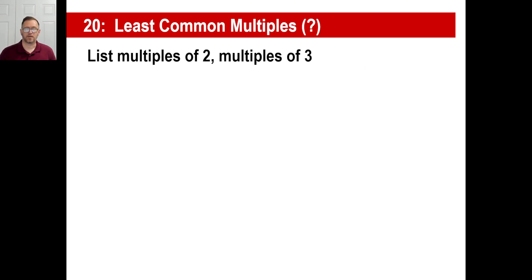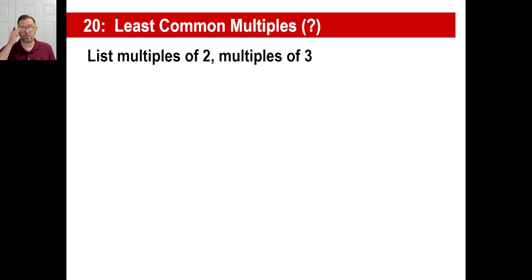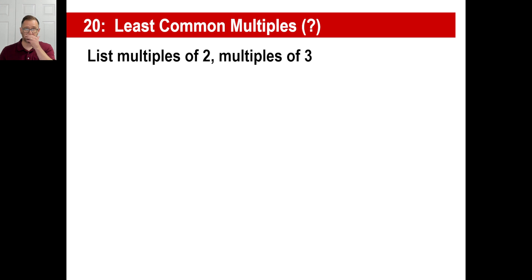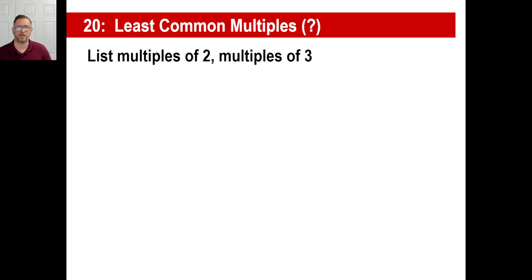Let's go to the next part, which is called least common multiple. You know what the word 'least' means. 'Common' means both or all three of something have something in common. And a multiple is a multiple. For example, multiples of 5 are 5, 10, 15, 20, 25. Multiples of 10 are 10, 20, 30, 40... Multiples of 12 are 12, 24, 36, 48, and so on. We're going to use a nice technique to find least common multiples. It involves the factor tree.